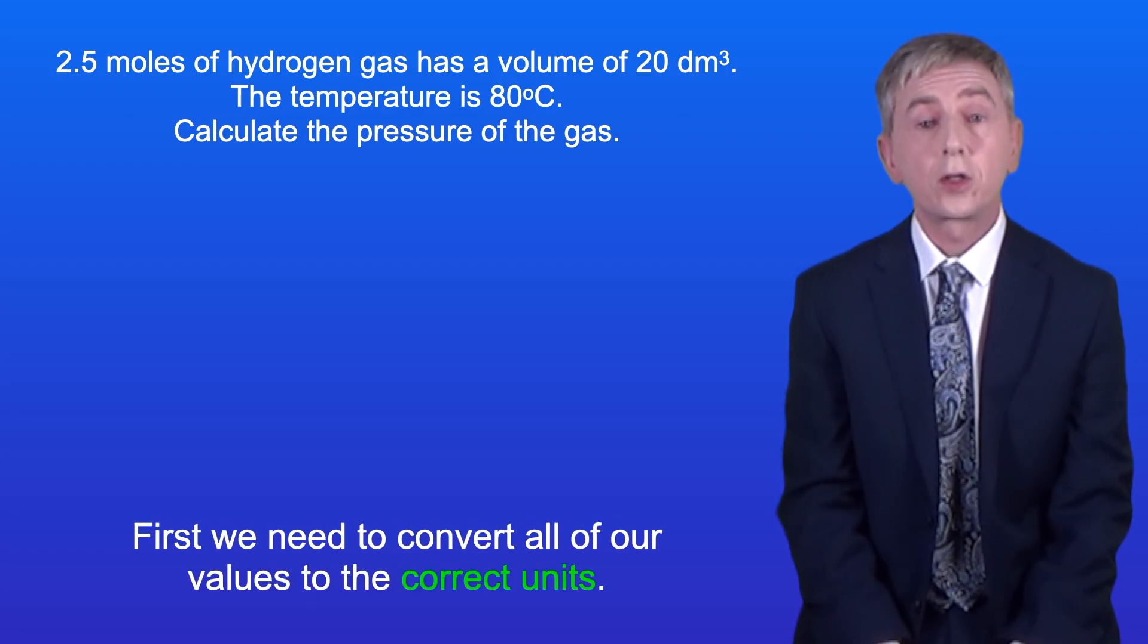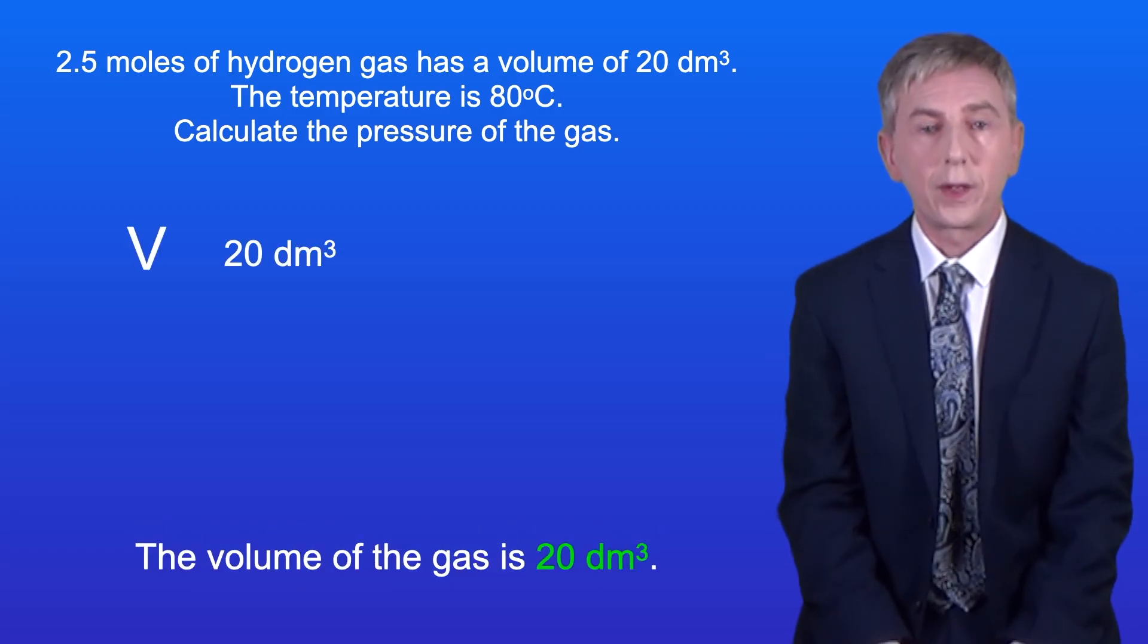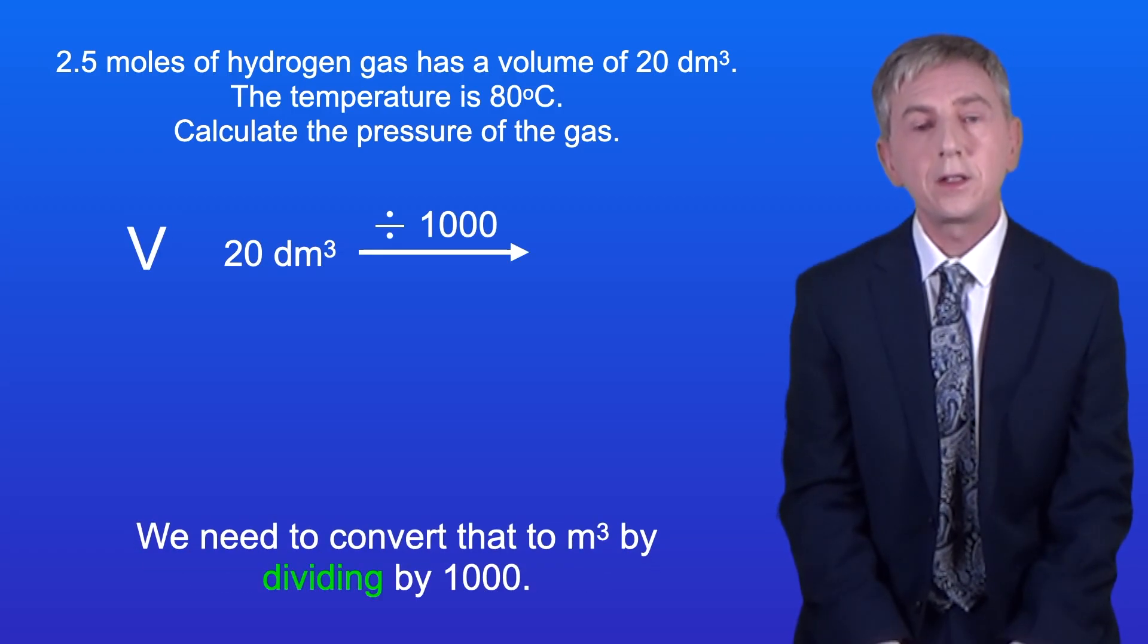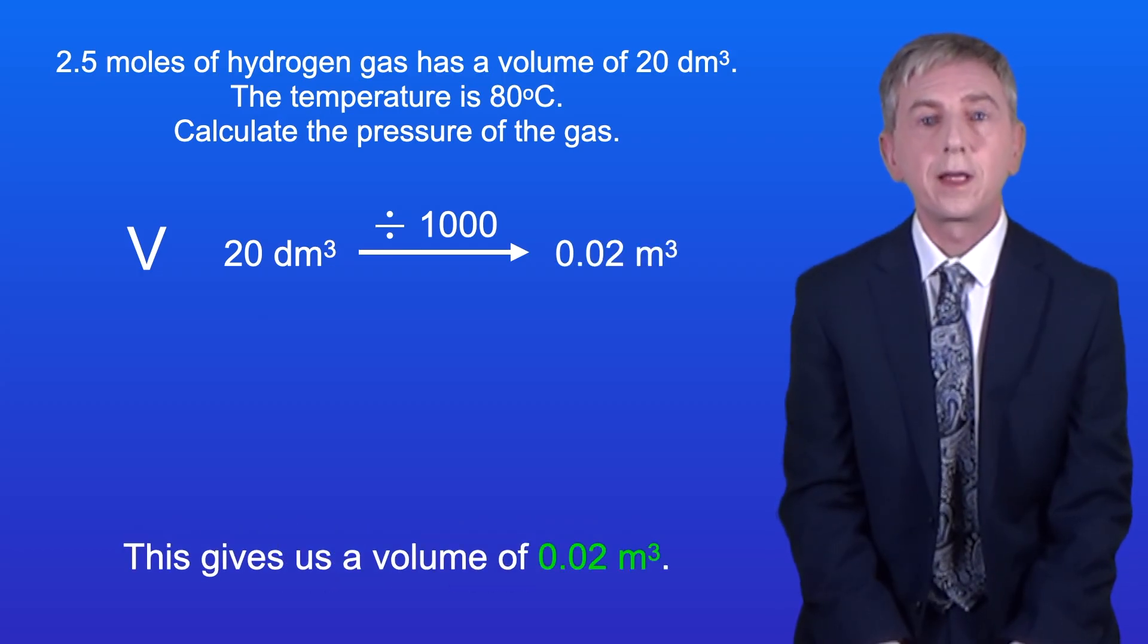Okay, first we need to convert all of our values to the correct units. The volume of the gas is 20 dm³. We need to convert that to m³ by dividing by 1000. This gives us a volume of 0.02 m³.